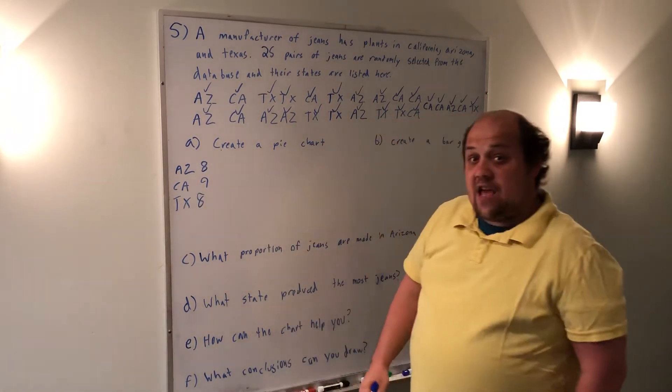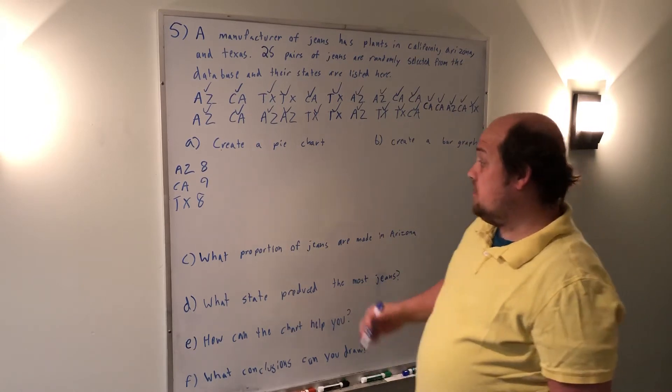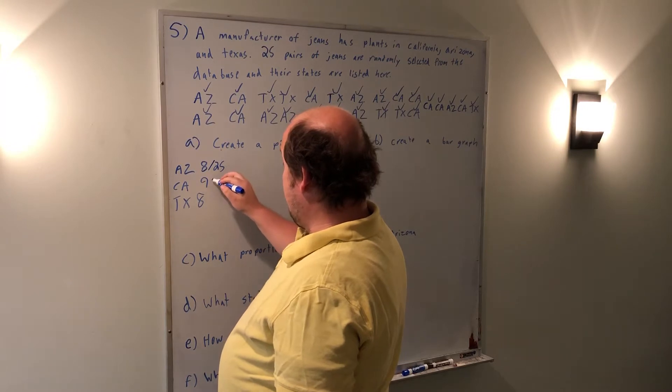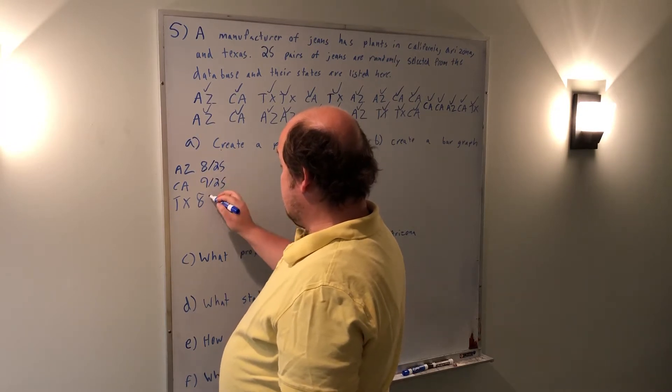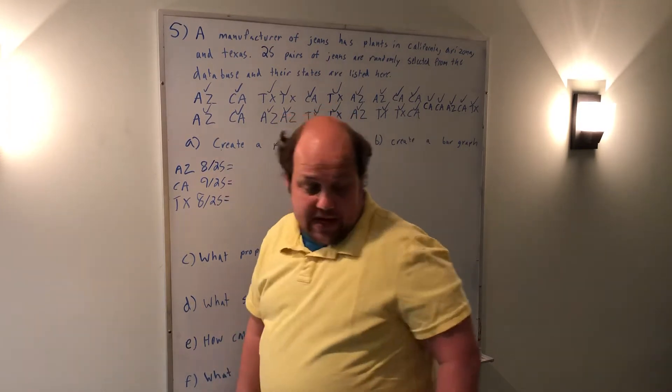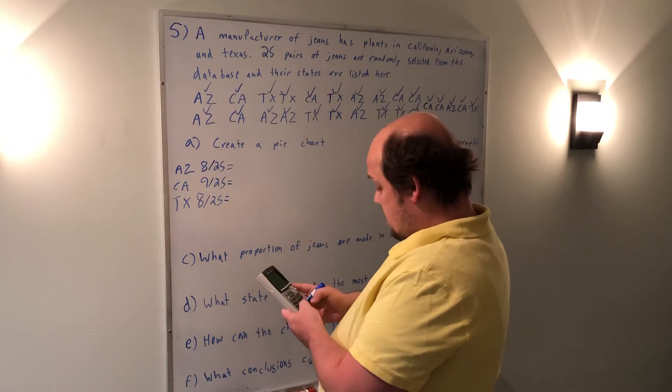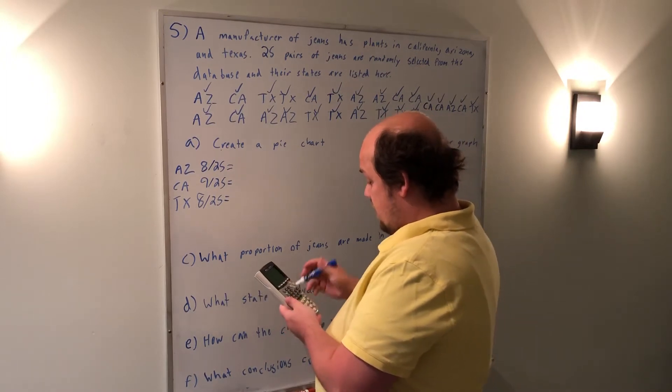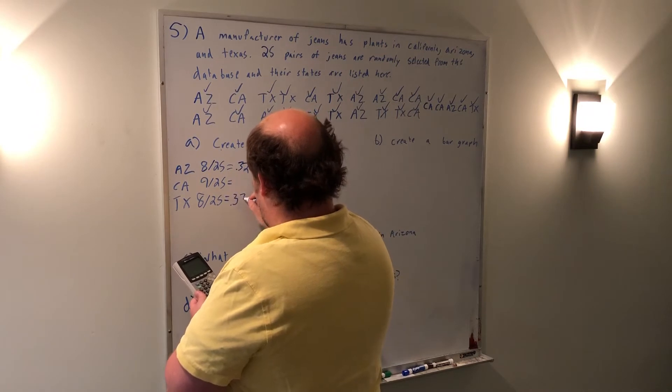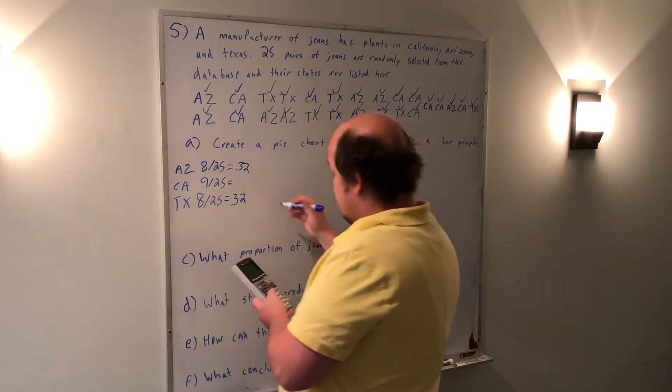Once I have those numbers, I want to figure out what proportion each one is. So Arizona is 8 out of 25. California is 9 out of 25. And Texas is 8 out of 25. I'm going to put those into my calculator to get decimals. When I do 8 divided by 25, I get 0.32. When I do 9 divided by 25, I get 0.36.